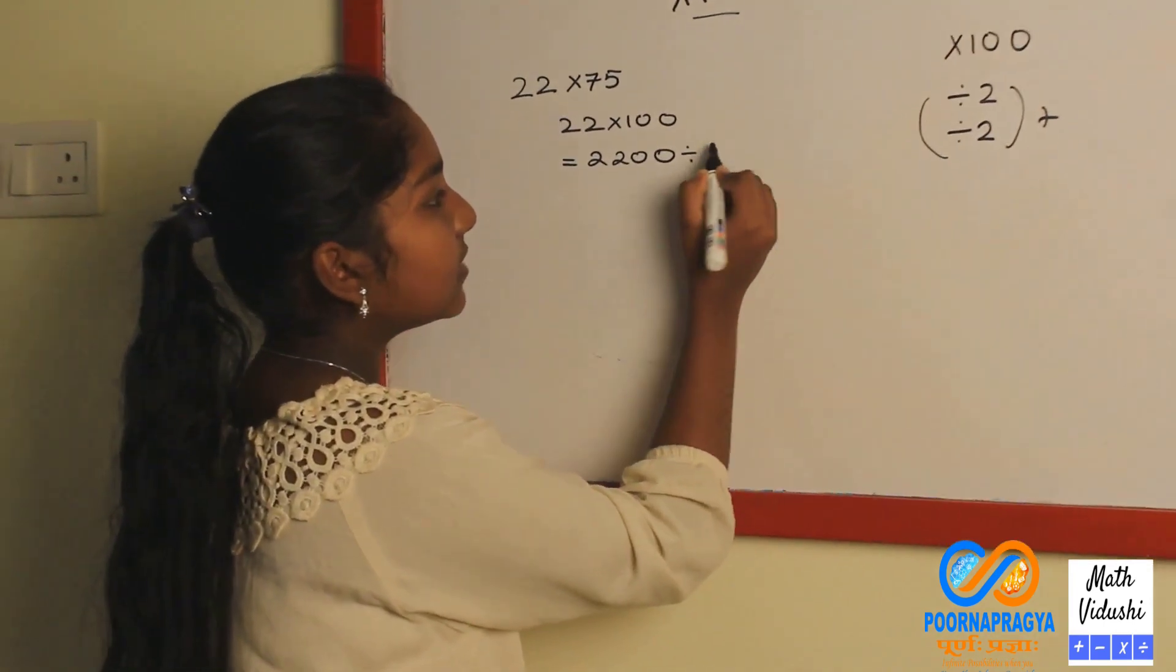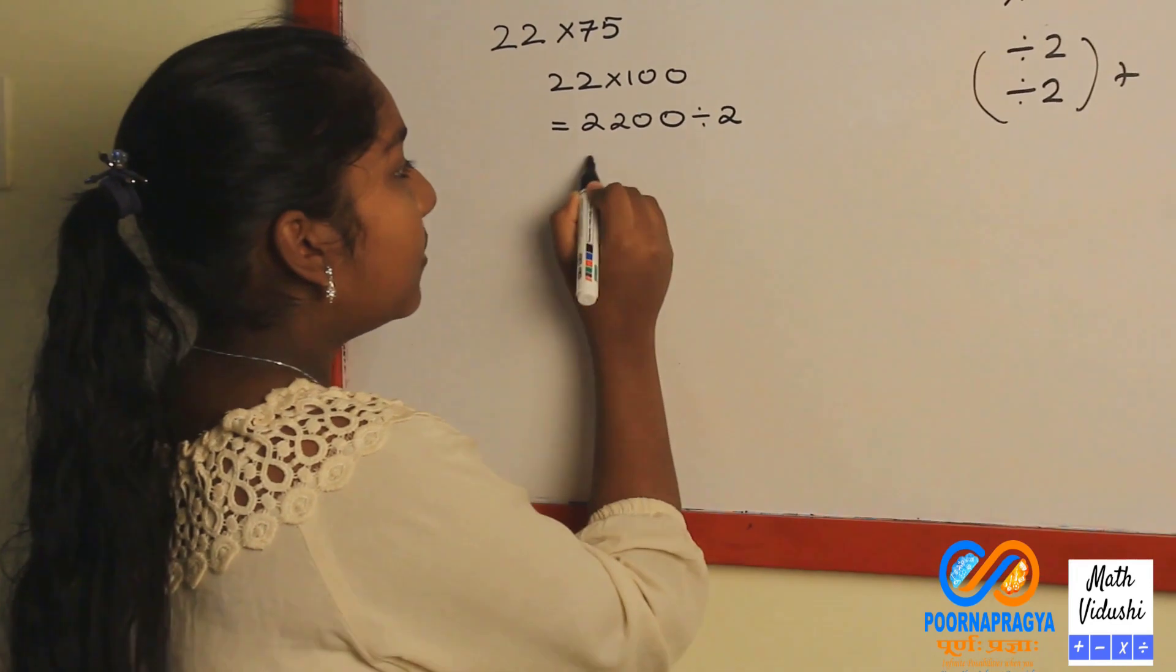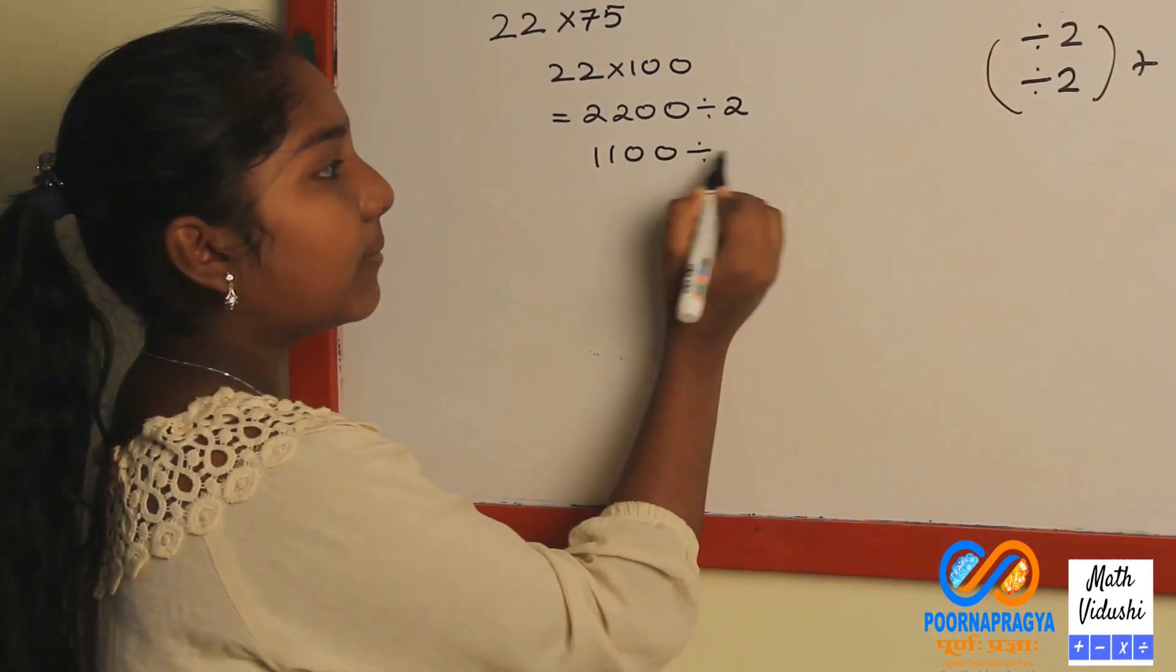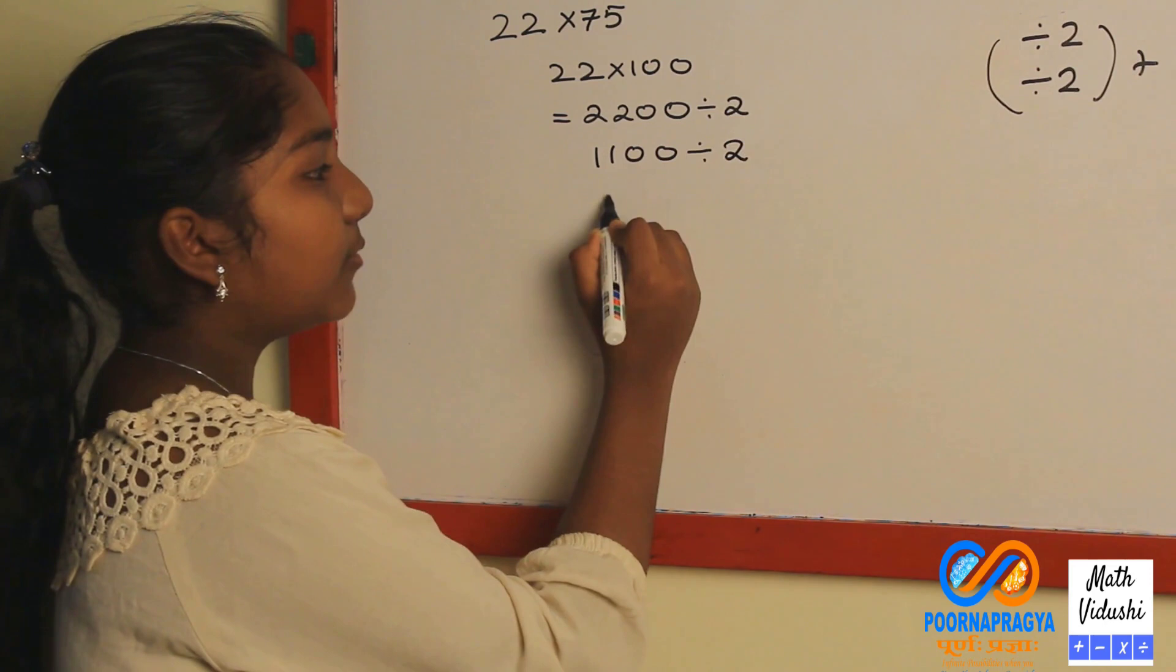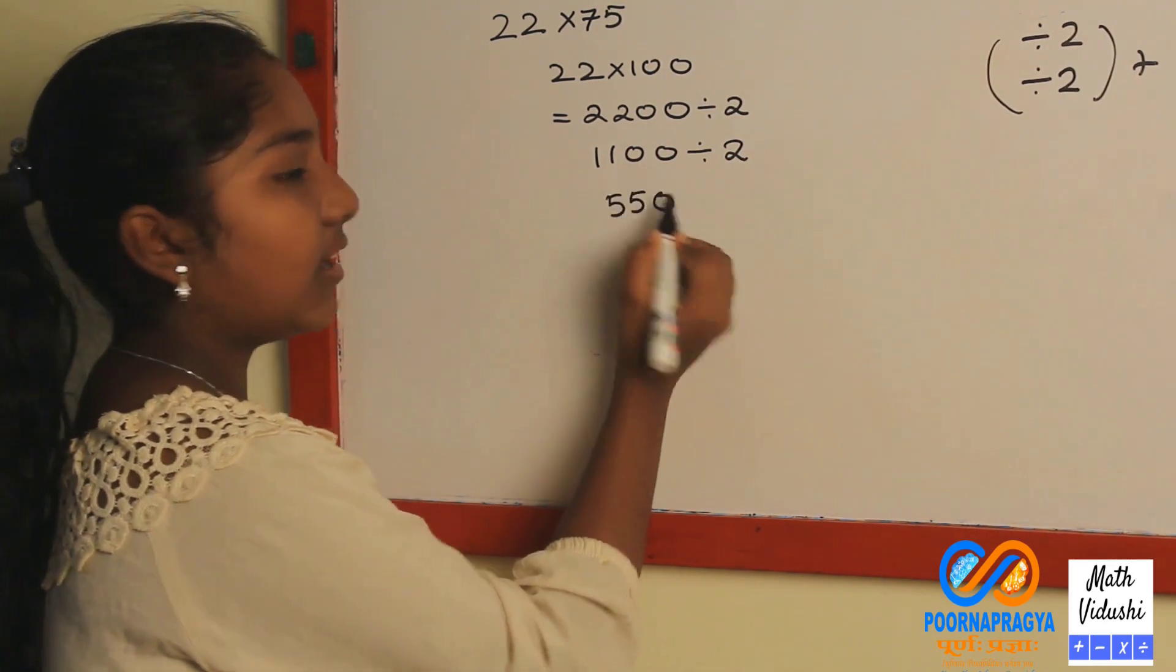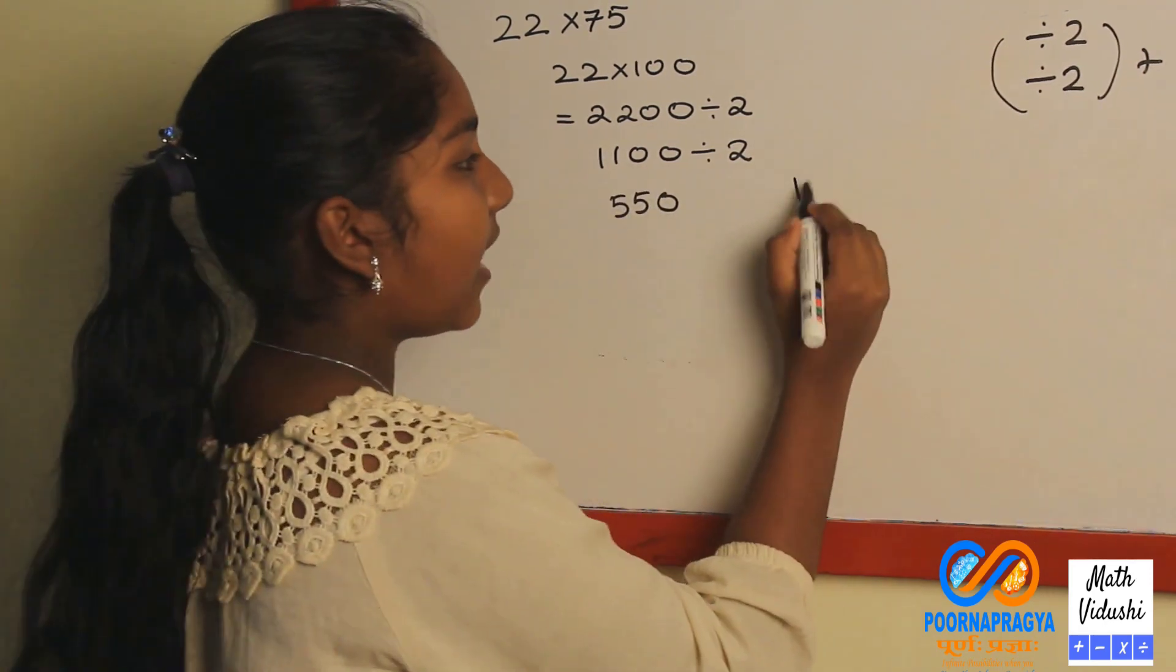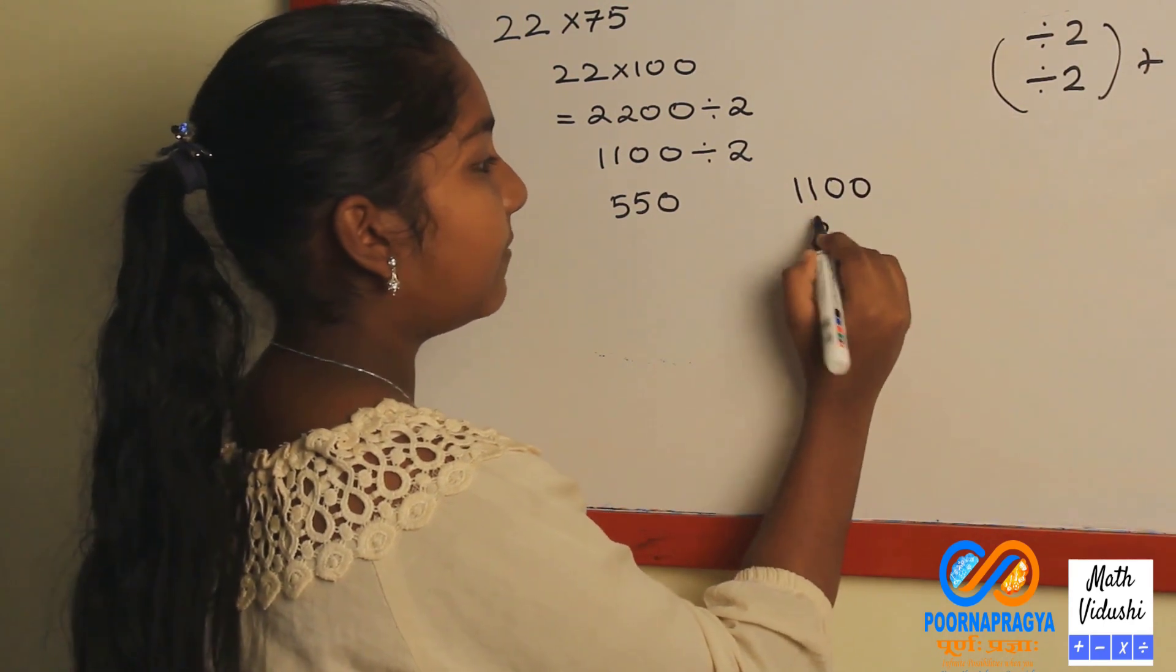Now divide this number by 2. You will get 1100. Now divide the number again by 2 and you will get 550. And at the last you will be adding 1100 with 550.